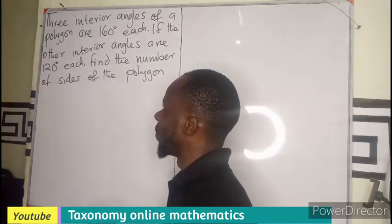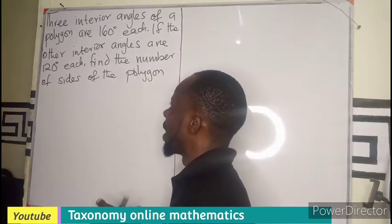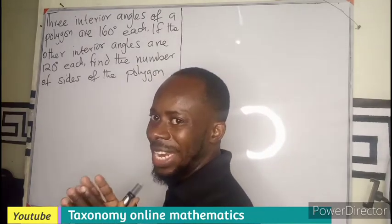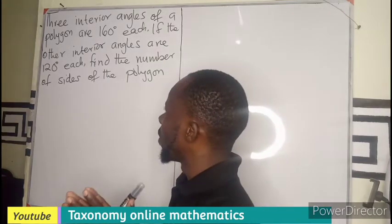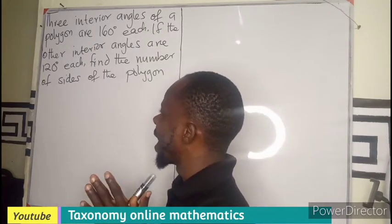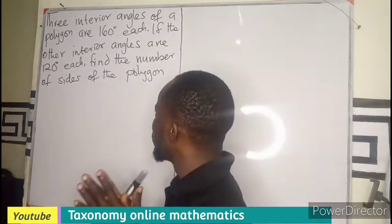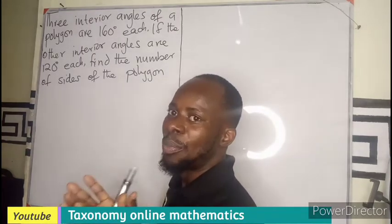We see that three interior angles of a polygon are given as 160 degrees each. If the other interior angles are 120 degrees each, we have to find the number of sides of the polygon.